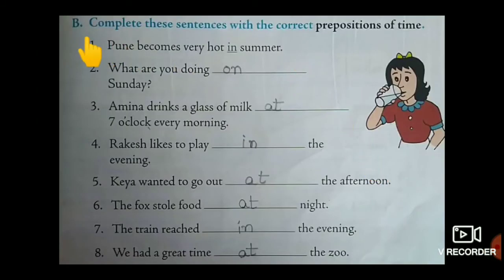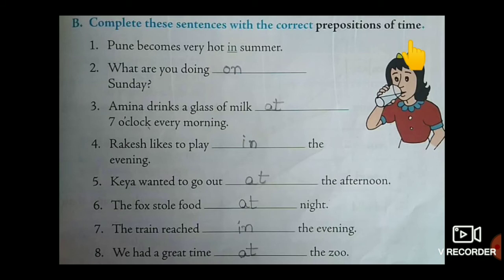Moving on to the next page. Here, complete these sentences with the correct prepositions of time. Prepositions of time, or time words, tell us the time when something happens. We use 'in' with times of day, seasons, months, and years. We use 'on' with days and dates. We use 'at' with clock time.